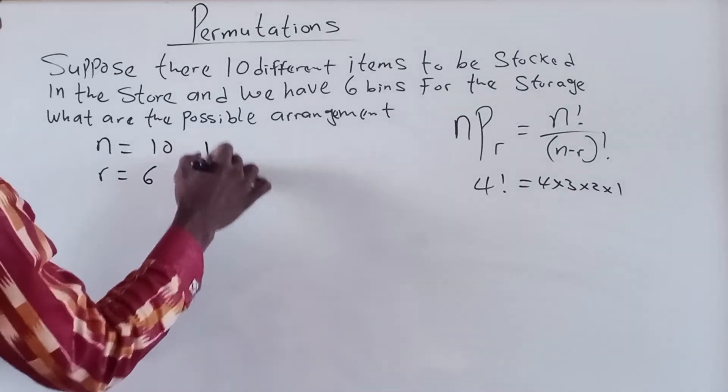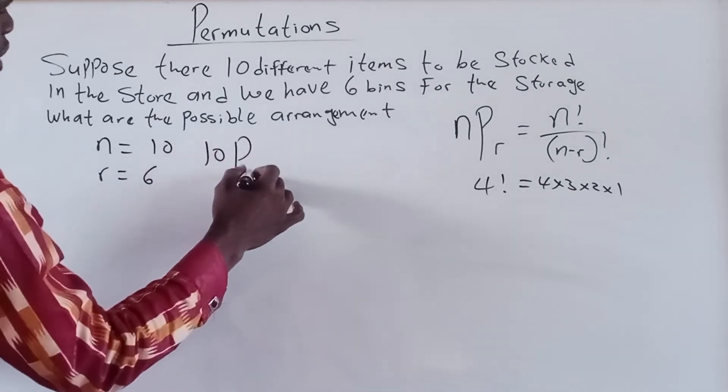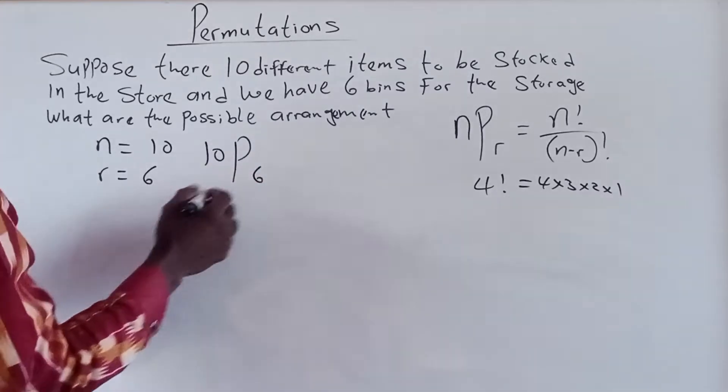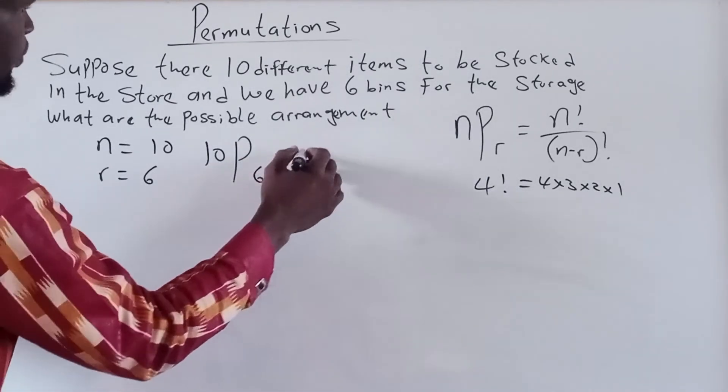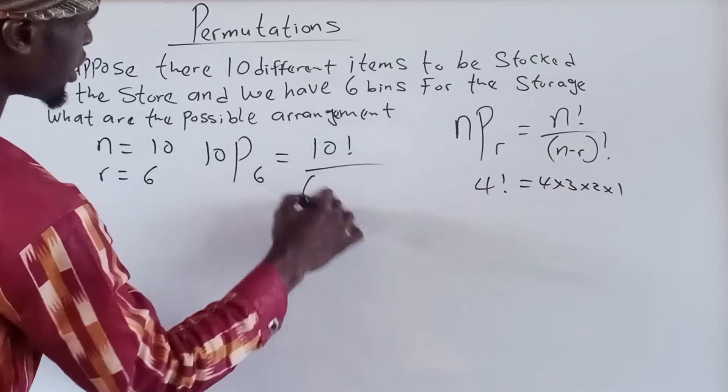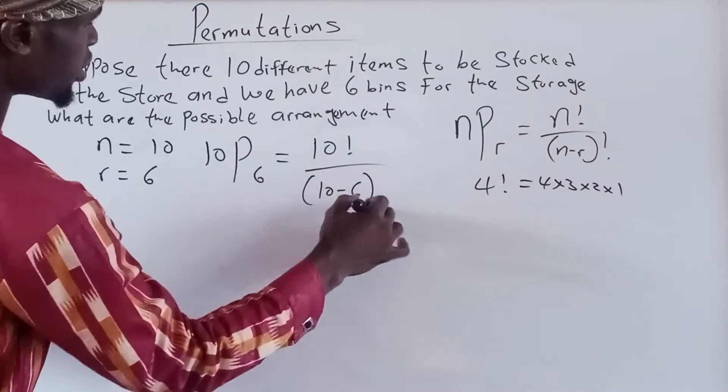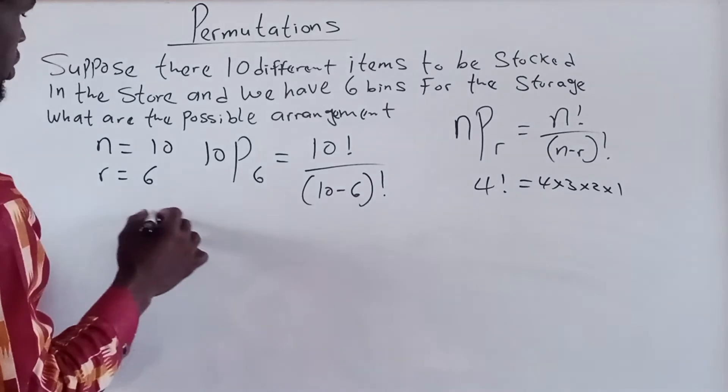So our 10 permutation 6, which is now equal to 10 factorial divided by 10 minus 6 factorial. So this is how to find it.